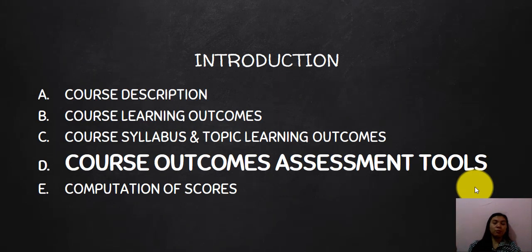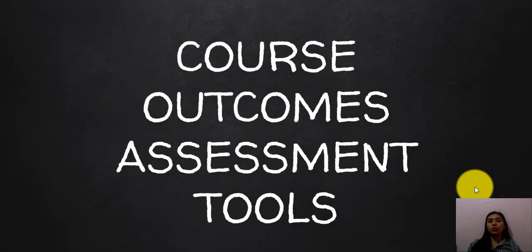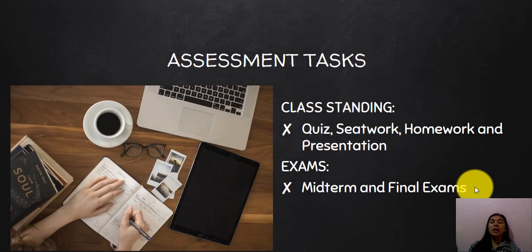The fourth part of this introduction covers course outcome assessment tools — how we assess that you have achieved the intended course learning outcomes. There are two assessment tools: first, your class standing, which consists of quizzes, seatwork, homework, and presentations; and second, your exams — a midterm exam and a final exam.